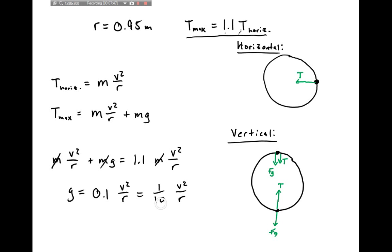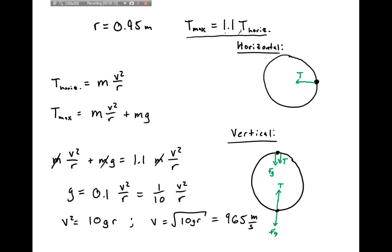Solving for v, I multiply both sides by 10r, giving v² = 10gr. Taking the square root, v equals the square root of 10gr. Plugging in the numbers, this equals approximately 9.65 meters per second.